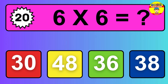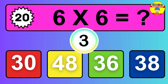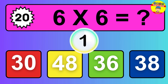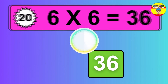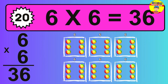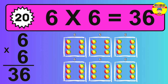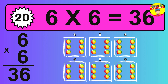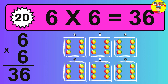Question 20. 6 times 6 equals what? The answer is 6 times 6 is 36. To calculate, we have 6 groups with 6 balls each one. So, how many balls do we have? You have 36 balls.